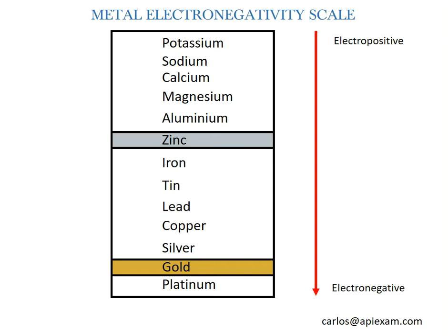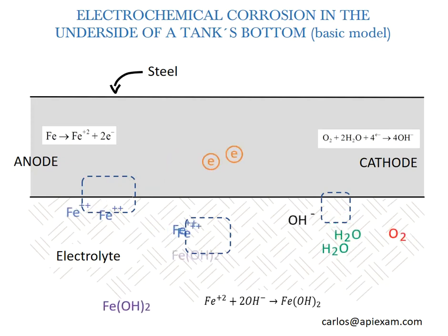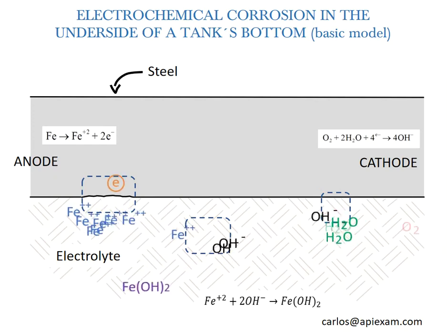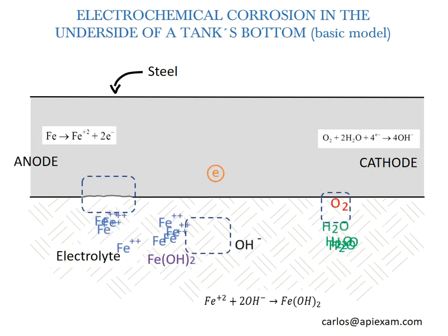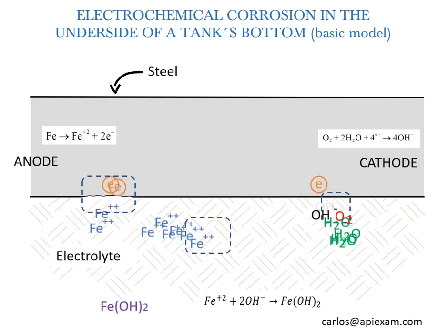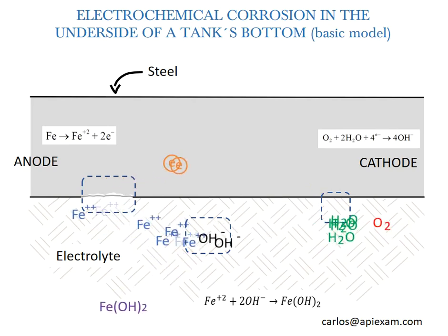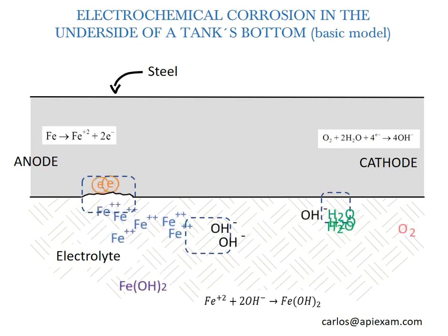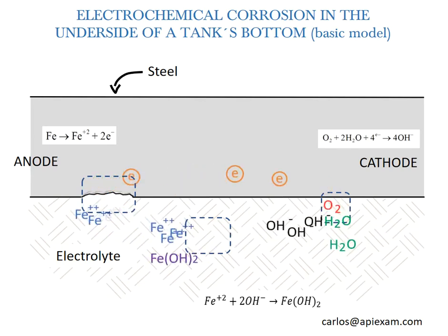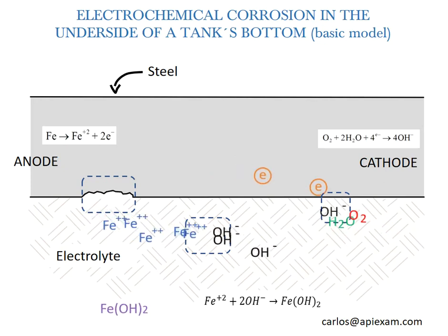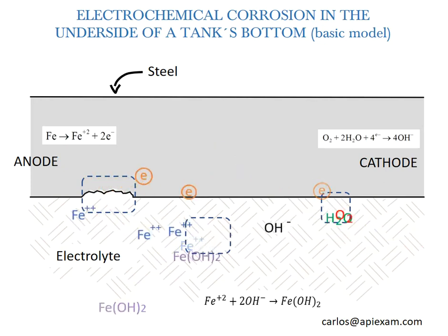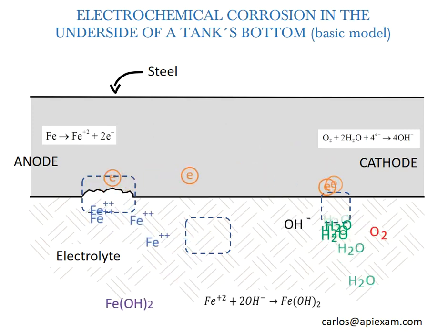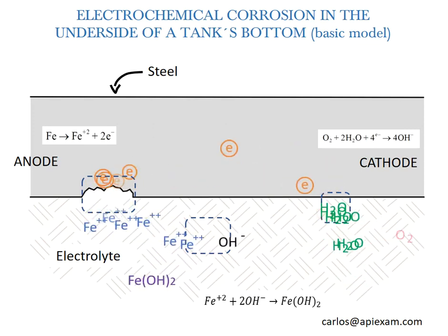With this in mind, let's check out the following animation. Here you can see an electrochemical cell. Corrosion happens only in the anode. You can see the electrons moving through the metallic path provided by the steel, and the chemical reactions taking place in the electrolyte. In this case, I only show you three chemical equations, but there can be many more.